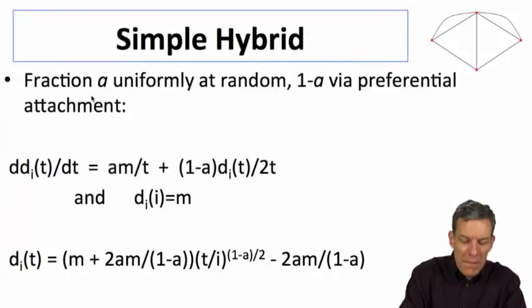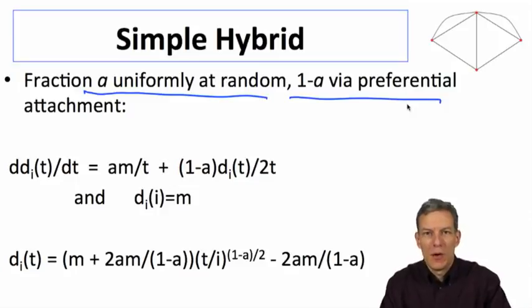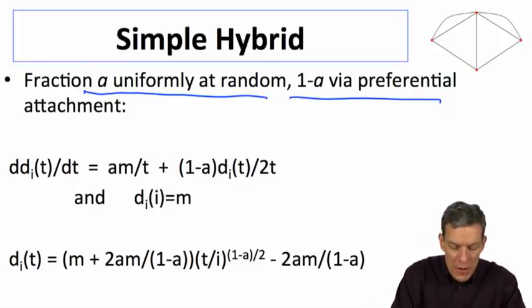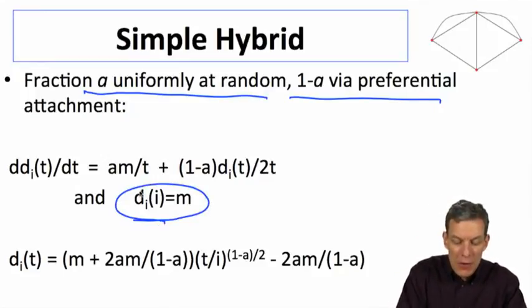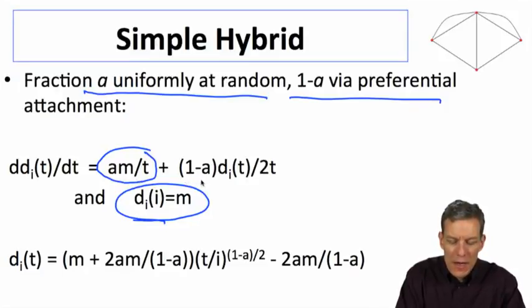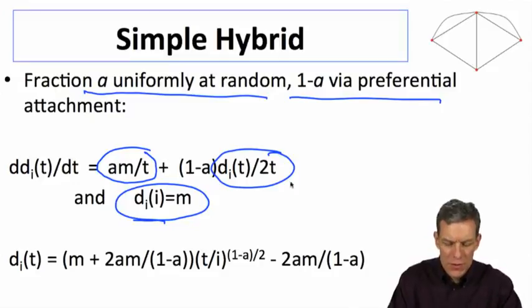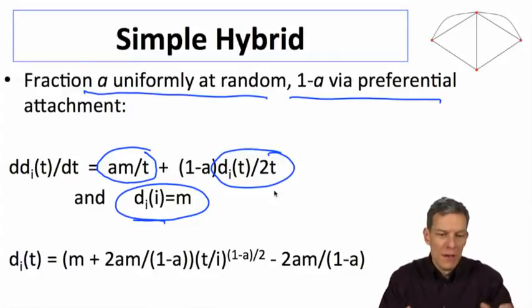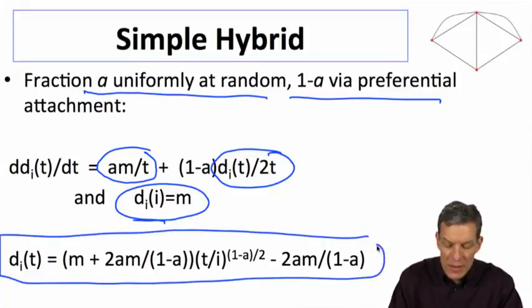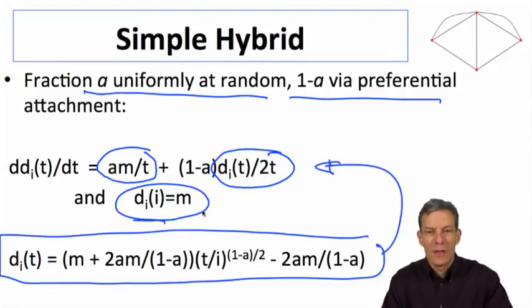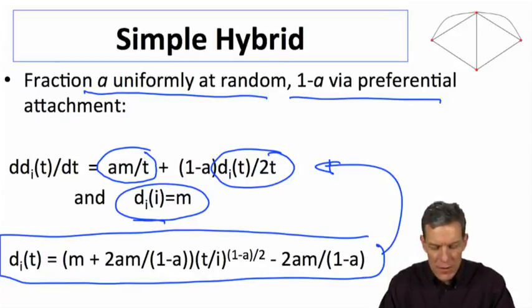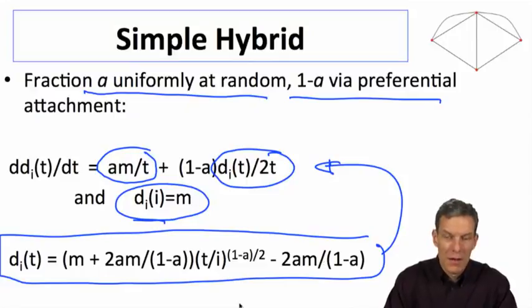Now what does this model look like? Fraction a formed uniformly at random, one minus a via preferential attachment. We can go back to our mean field approximation, do exactly what we did before. We're still going to have the starting condition that when you're born you form m links. Now we're going to have a fraction a of my new links over time look like the uniformly at random m over t, and a fraction one minus a look like they did in preferential attachment, which is proportional to my degree over 2t. There's an m over 2t times m—I've divided out the m's. So we've got this simple differential equation, and if you solve that, you can just check that this differential equation—if you differentiate this with respect to time, you'll get this back, and the initial starting conditions. This is the solution to that differential equation. This is a relatively standard differential form, and this is the solution for that differential equation with that starting condition.